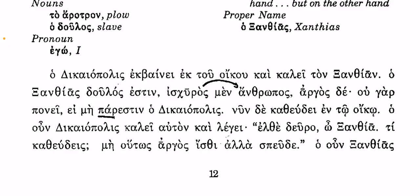Let's move on — the last bit of the second line into the third line. Another post-positive: 'gar' is like 'for,' and 'ou' is a negative. So 'ou gar ponei' means 'for he does not work.' Then 'ei mi' — you'll see later in this section 'eimi' meaning 'I am,' but here they're separated, so 'ei mi' means 'unless': 'ou gar ponei ei mi parestin o Diciopolis' — for he does not work unless Diciopolis is present.